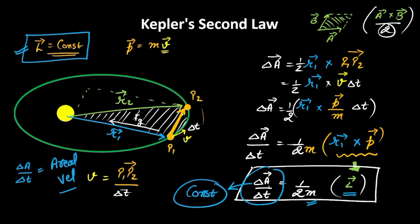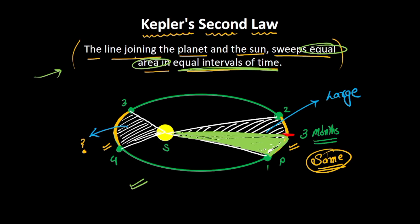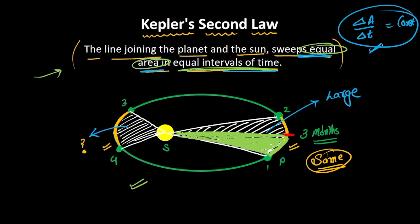So we can say that the areal velocity of a planet is constant, and this is exactly what Kepler's second law states: the line joining the planet and the sun sweeps equal area in equal intervals of time. The areal velocity being constant is an equivalent statement, though a slightly more complex one. I hope you understood Kepler's second law. See you in the next video — bye-bye!